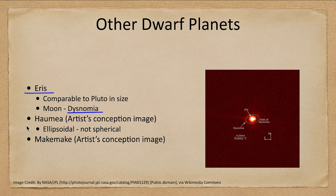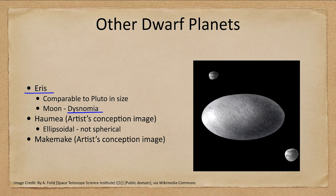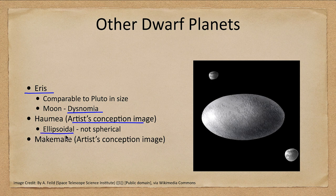Haumea is shown here as an artist's conception based on observations from Earth. It has a couple of moons and is one of the objects that is not spherical but ellipsoidal — a flattened shape, which is also a stable configuration under gravity for a massive object. This ellipsoidal shape still meets the requirement to be a dwarf planet, which calls for enough mass to pull it into a spherical or ellipsoidal form.